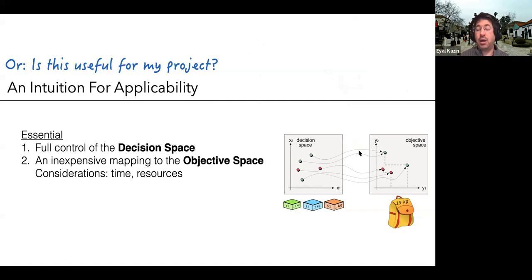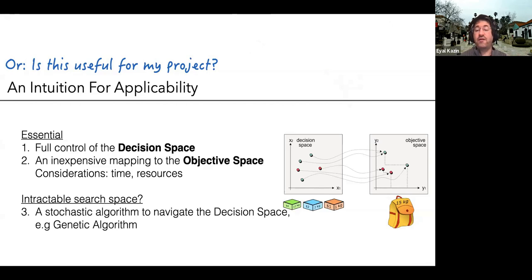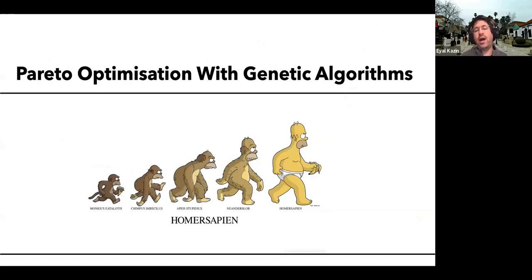If you can brute force your way to the full solution space, you can literally open a spreadsheet, draw a Pareto front, sit with the domain expert, and choose which solutions to go forward with. Most likely, though, you'll deal with an intractable search space, meaning you won't be able to brute force your way through but can get a proxy of what the solution space looks like. In that case, you'll want to use a stochastic algorithm that's intelligent in how it navigates the solution space. One that practitioners like to use is called genetic algorithms. A lot of people use genetic algorithms with single objective optimization, not realizing the power of Pareto fronts — and that's one of the objectives of this talk.